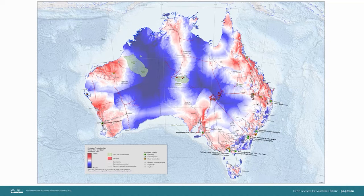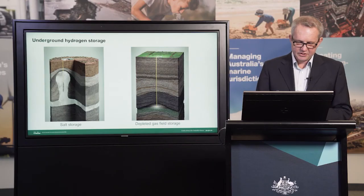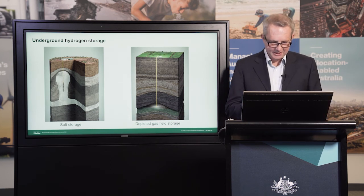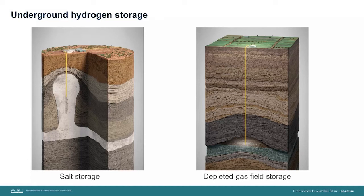Once you start adding electricity transmission lines and gas pipelines you can start to see where there are infrastructure gaps. Also shown on this map are known thick salt locations around Australia in green and the location of depleted gas fields. This brings us to the next topic: underground hydrogen storage. A major area of research under EFTF is underground hydrogen storage. We are looking at underground salt accumulations which can be used to produce salt caverns but also looking at the feasibility of using depleted gas fields for hydrogen storage. We are just wrapping up a major project with CO2CRC and Schlumberger looking at the geomechanical effects of hydrogen storage in a depleted gas field compared to other gases, making sure that the hydrogen storage is safe and doesn't cause fractures in the storage rock.